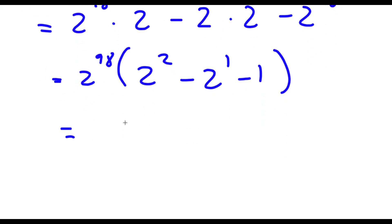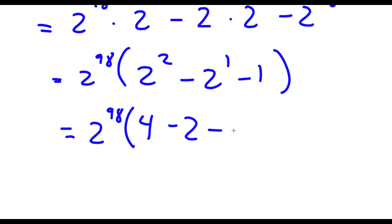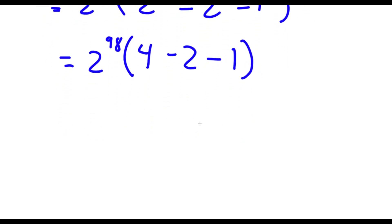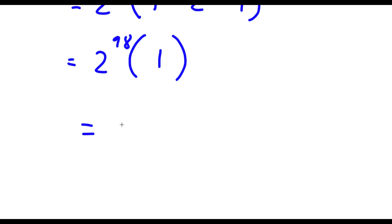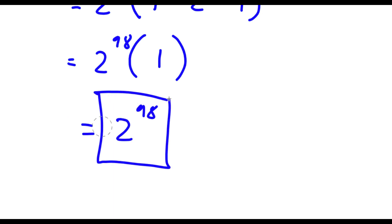Now I'm going to go ahead and simplify this. 2 to the power of 2 is 4, and 4 minus 2 to the power of 1 is just 2, and I have minus 1. So this is the same thing as 2 to the power of 98 times 4 minus 2, which is 2, and 2 minus 1 is 1. So I have 2 to the power of 98 times 1, which is simply 2 to the power of 98. So this is my answer.